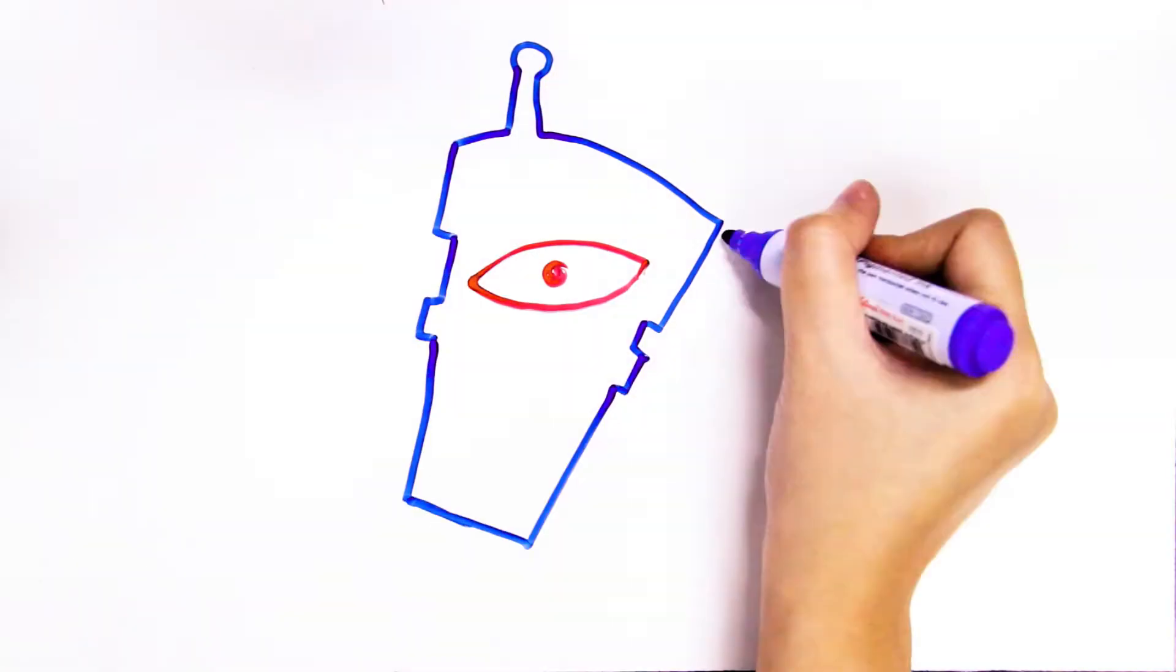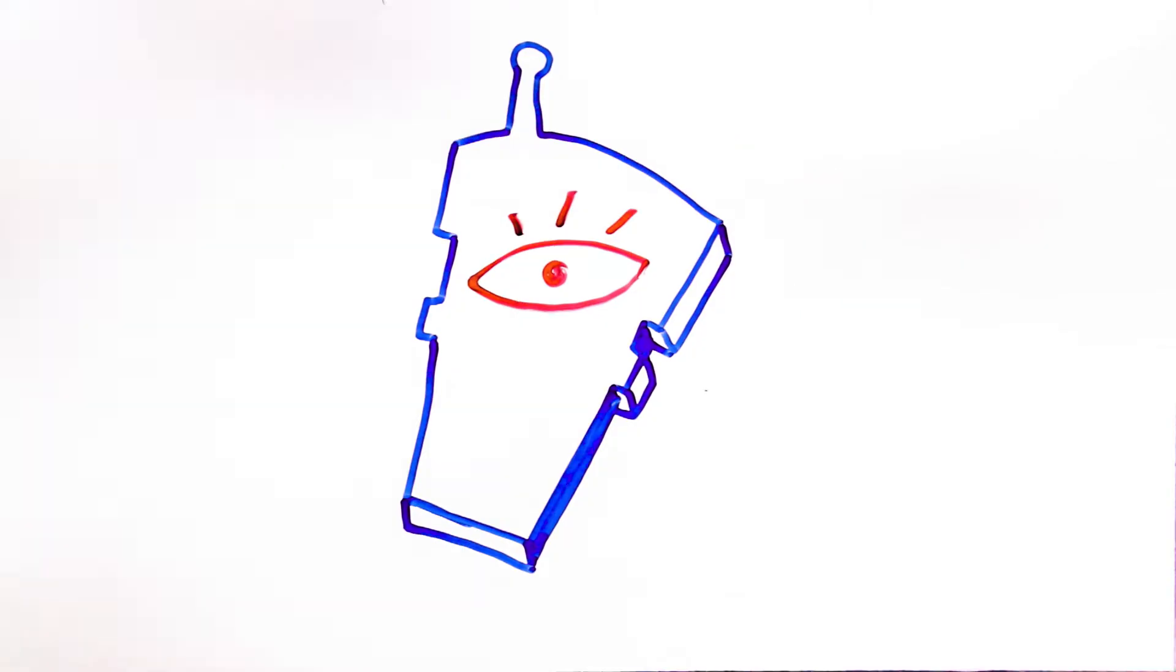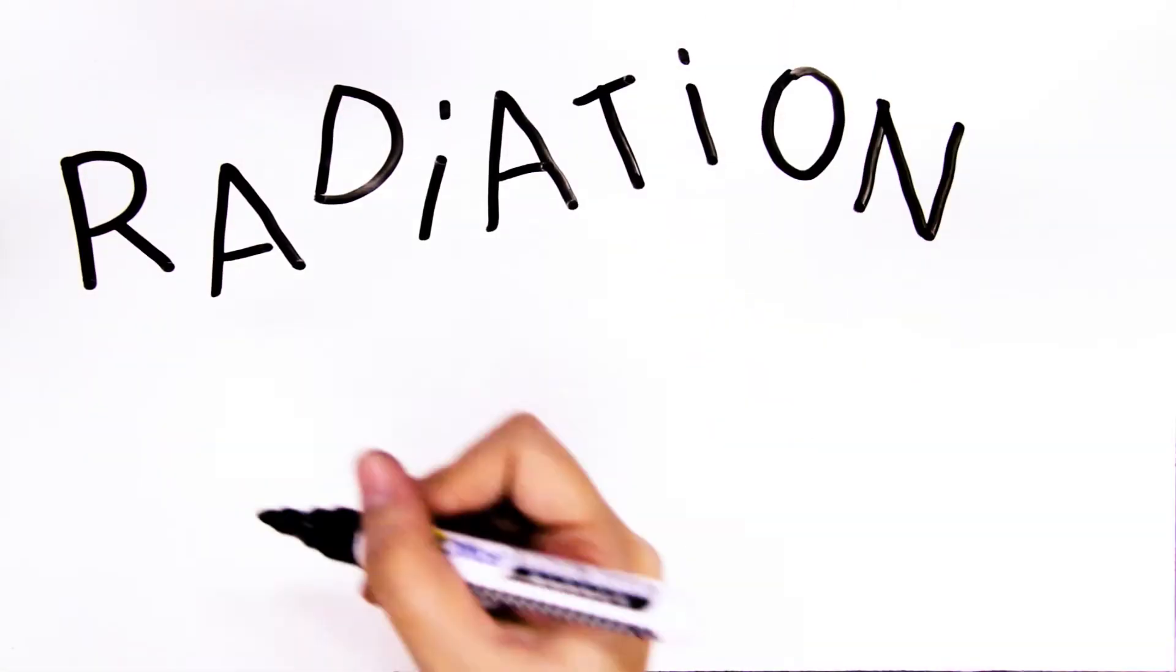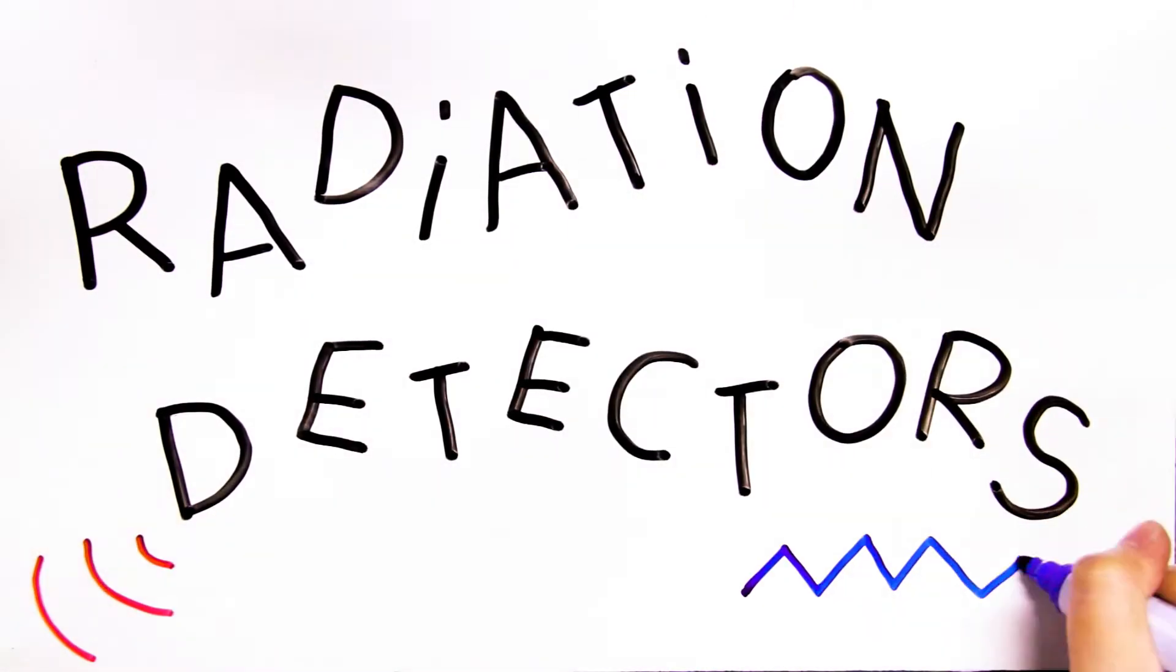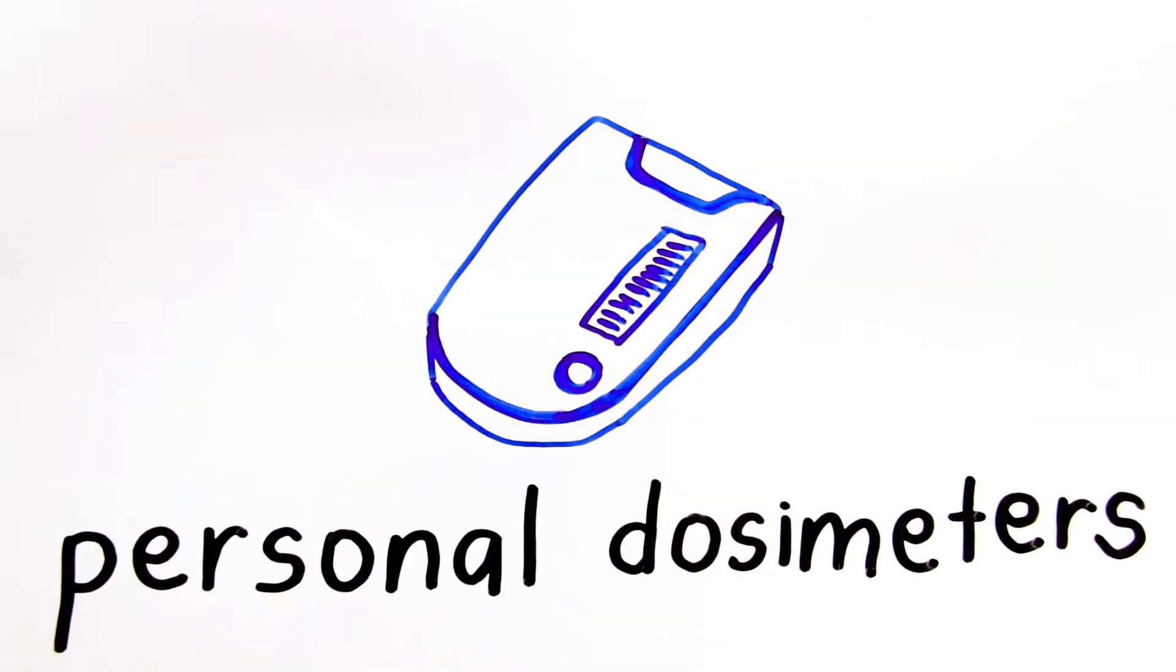Our handy-dandy radiation detectors. There are many kinds of equipment that can detect radiation, or at least tell you how much dose you can acquire. We have survey meters, contamination meters, personal dosimeters, and so on.